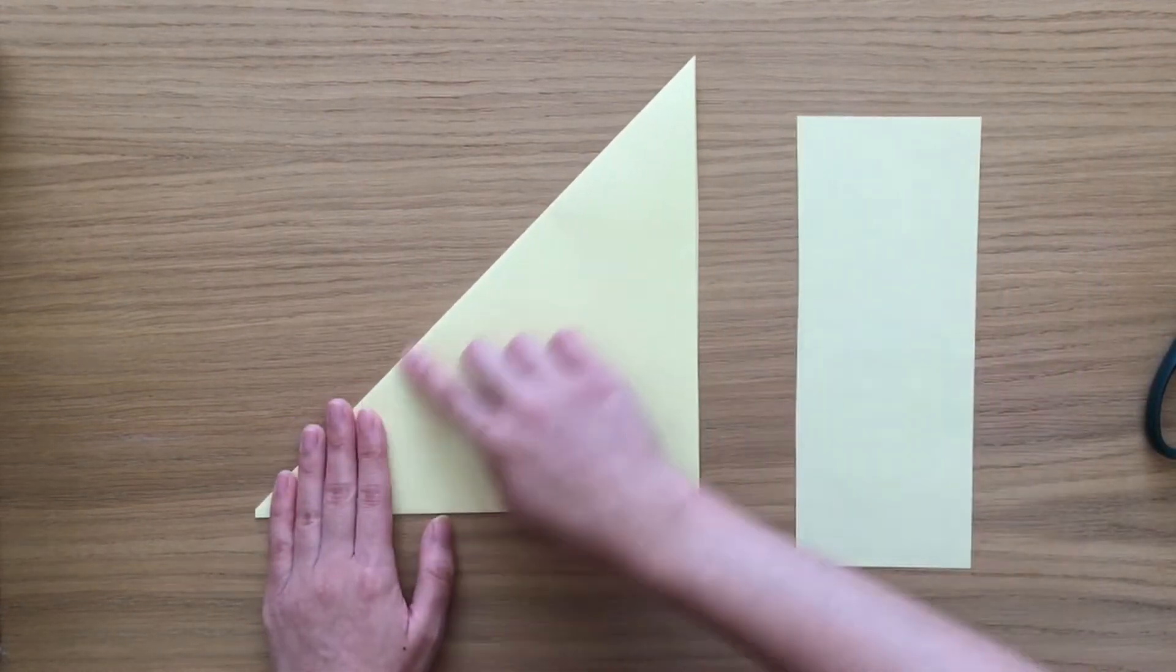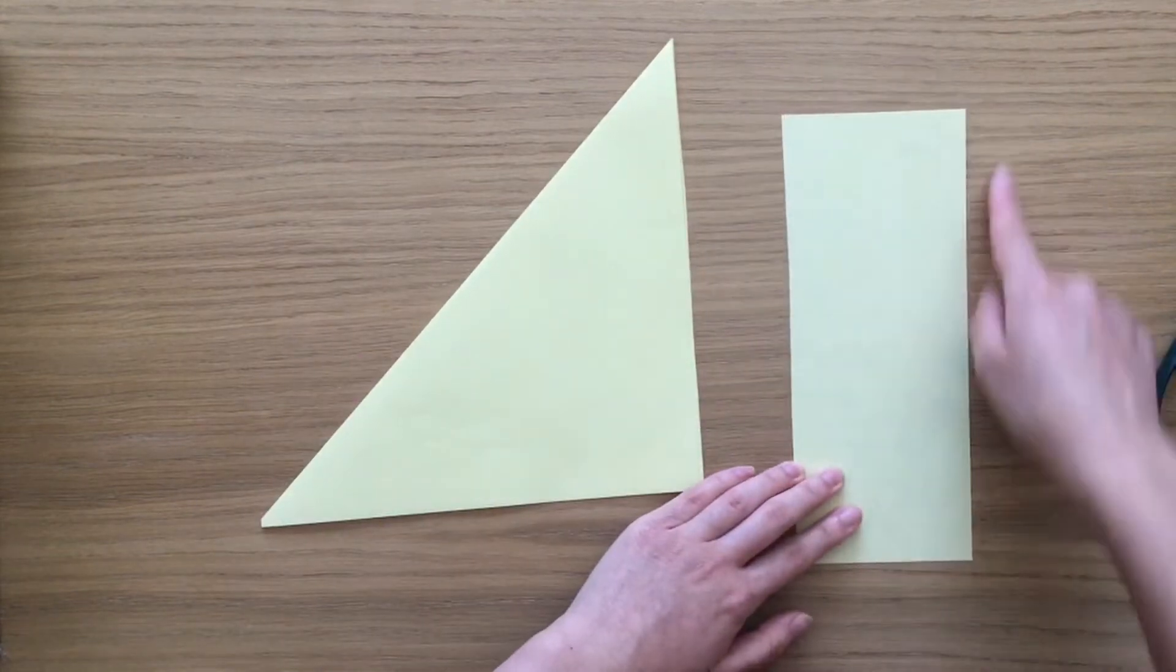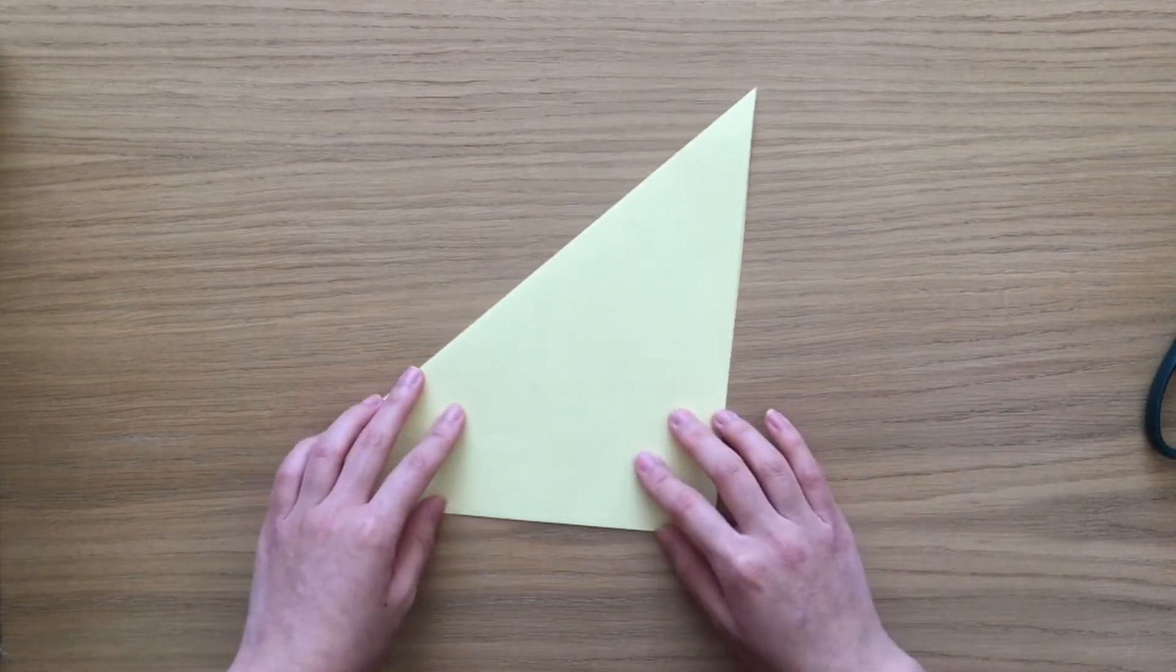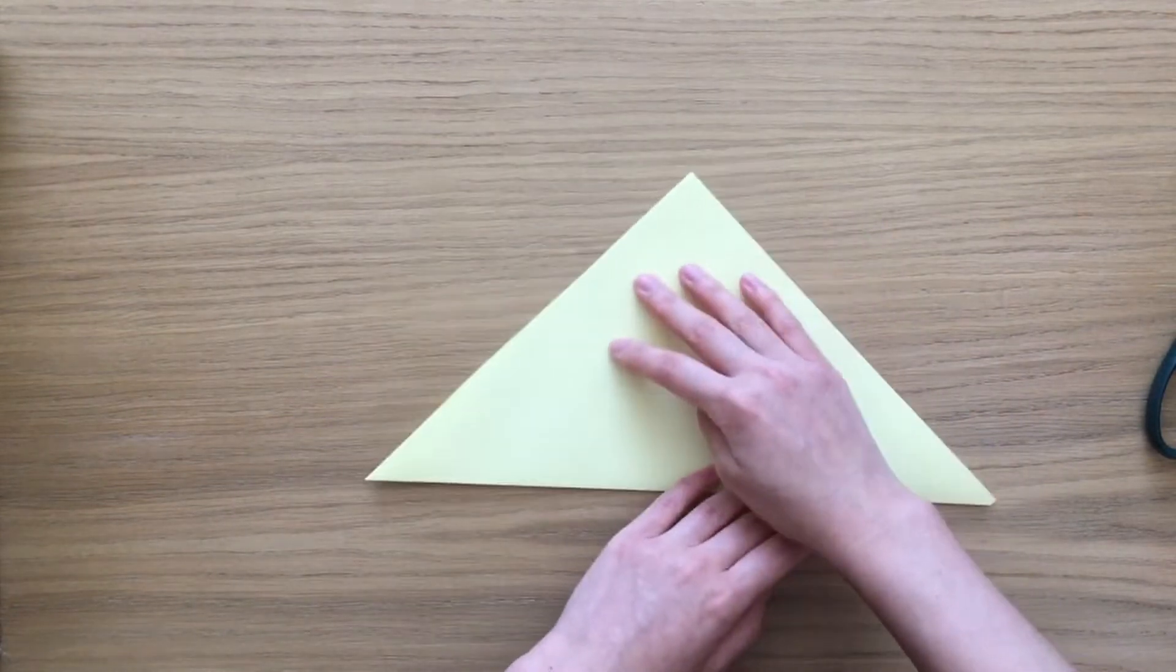So you've got a big triangle and a little rectangle. You won't need the rectangle, so you can put that aside. Turn the triangle around like this so the straight side is nearest to you.